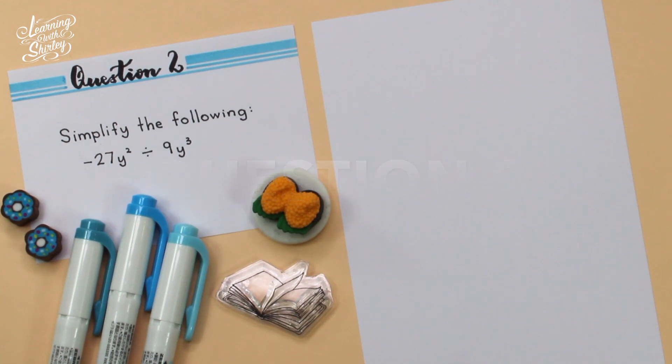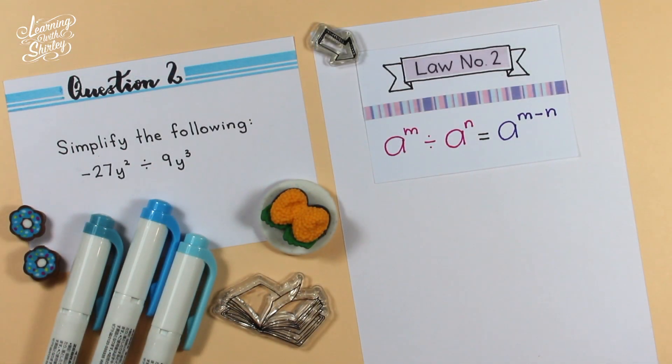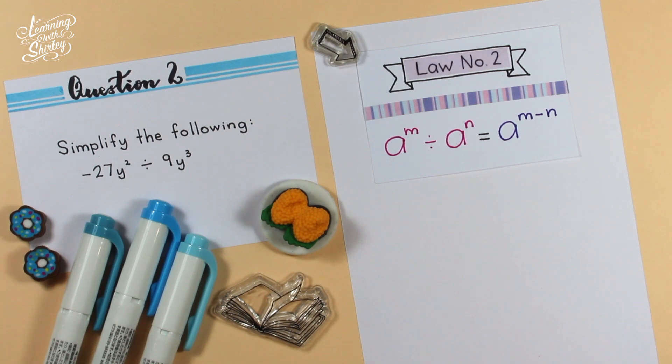For question number 2, simplify the following: negative 27y square divided by 9y cube. To solve this question, we're going to use law number 2, which is a to the power of m divided by a to the power of n equals a to the power of m minus n.